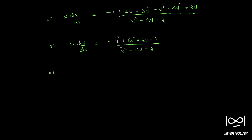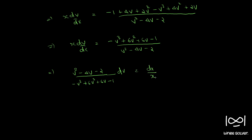We can use the method of separation of variables, grouping v terms together. We get (v² - 4v - 2) divided by (−v³ + 6v² + 6v - 1) dv = dx/x.